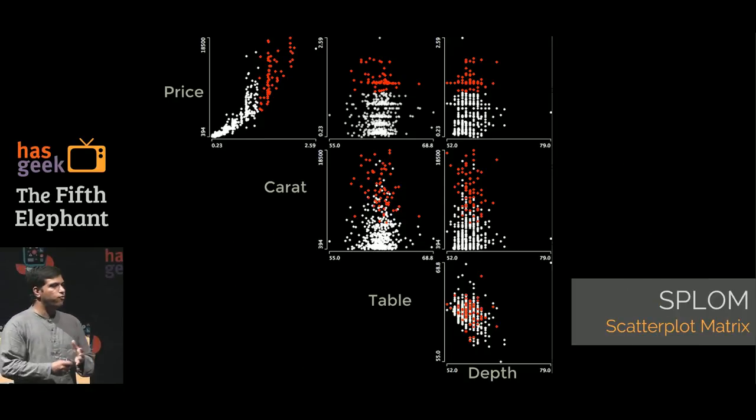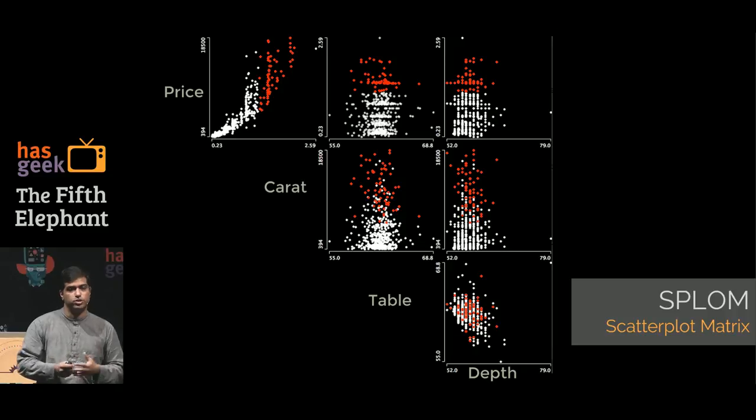You can then, instead of thinking of only similar ways, start to do scatter plot matrices or plot different variables. In this case, price, carat, table, and depth, each combination of that. We get these six plots and scatter plot matrix is another way to start to look at many of these dimensions. Scatter plot is probably the most effective way you would start to look at it.